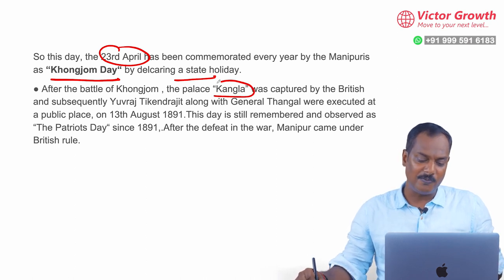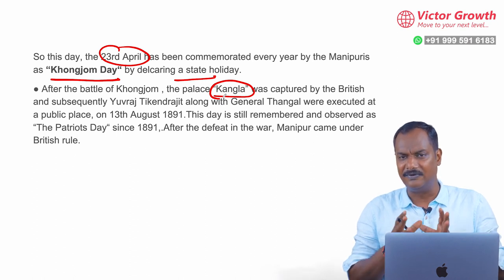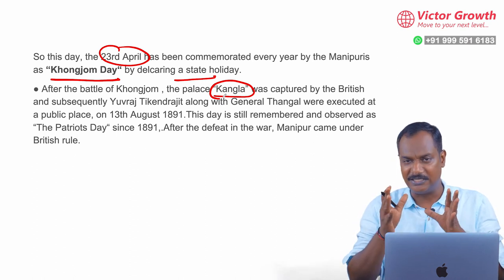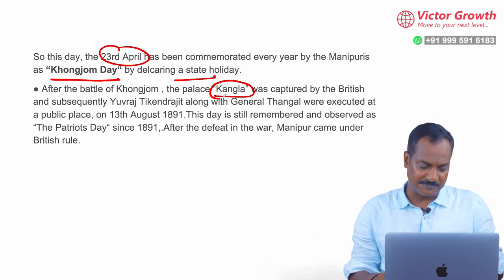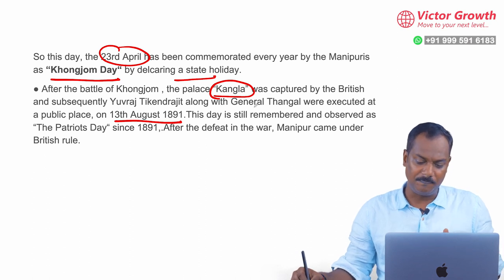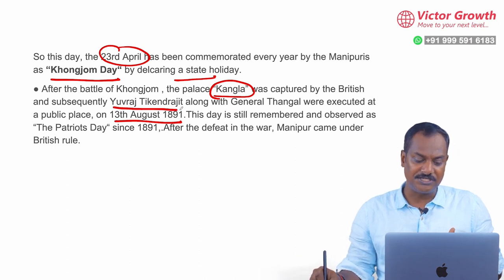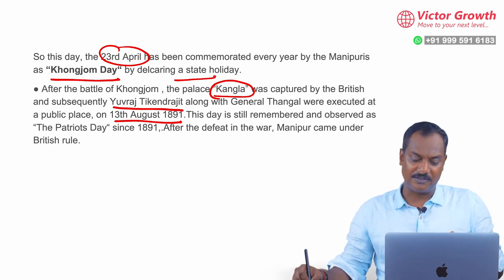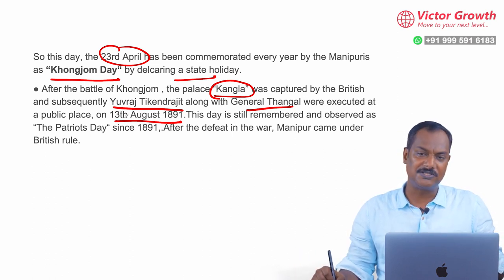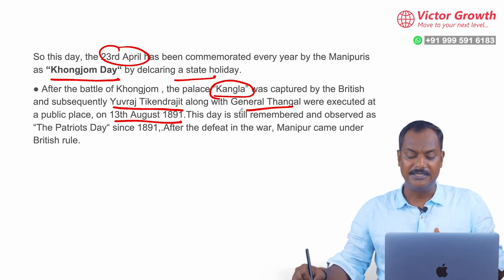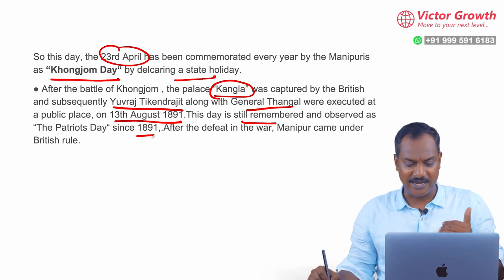The Kangla Fort is tentatively on UNESCO's list for World Heritage Site. Kangla Fort was a power center of the Manipur Kingdom and is now an important tourist place. After the Battle of Khongjom, the British captured Kangla Fort. Subsequently, Yuvaraj Tikendrajit along with General Thangal were executed by hanging in a public place on 13th August 1891.